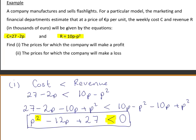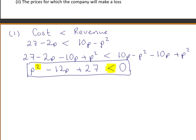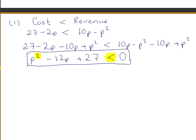Looking at the left-hand side of this quadratic inequality statement, you should recognise that this is a u-shaped curve since the coefficient of p squared is positive. To find the x-intercepts of this curve — that is, the parts where the curve will cut the x-axis — we will set this equal to 0.